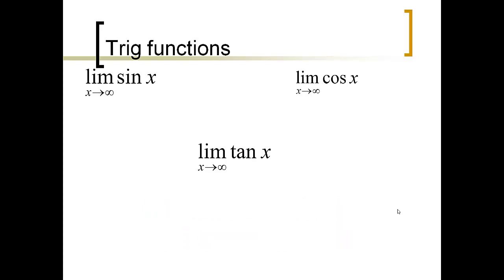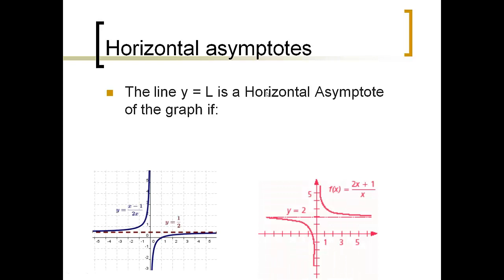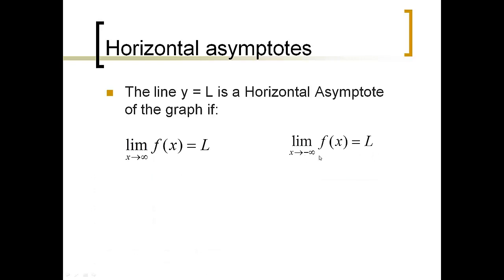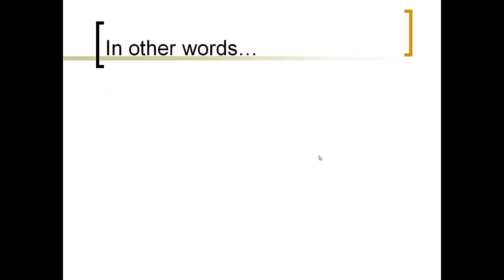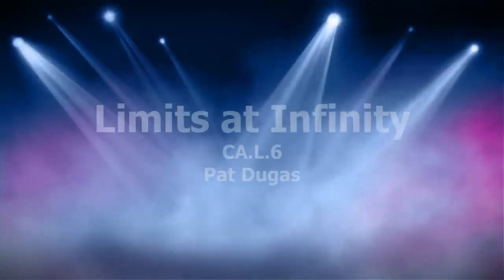A function that has a limit at infinity will also have a horizontal asymptote — this becomes the limiting value of the function. That horizontal asymptote is defined by the line y equals L, where L is the limit of the function. A function has a horizontal asymptote if the limit as x approaches infinity or negative infinity is some finite value L. Our original function had a limit of 3, so it has a horizontal asymptote at y equals 3. A function can have multiple horizontal asymptotes by taking limits in both directions.